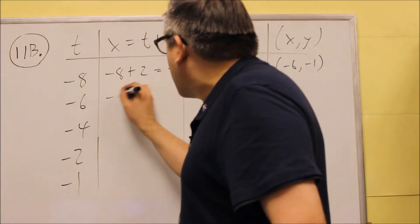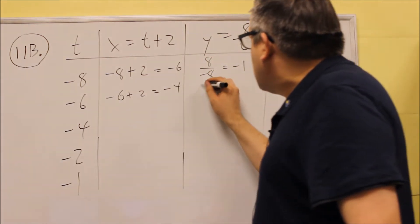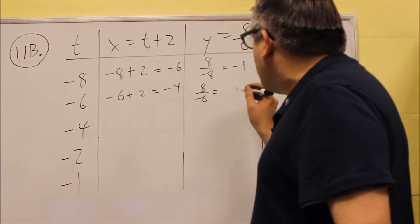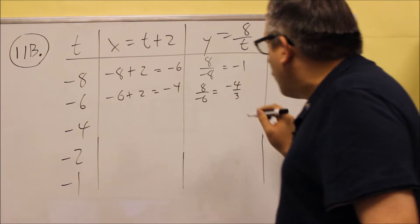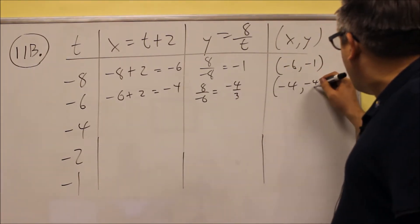Next we do this one, negative 6 plus 2 is negative 4. 8 over negative 6, we get a fraction of negative 4 thirds. So we get negative 4 and negative 4 thirds.